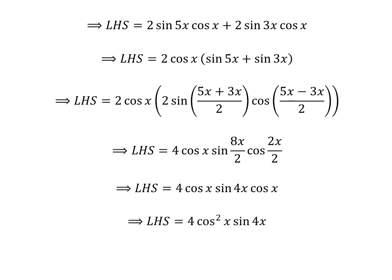The above expression can be written as the left hand side equal to 4 times the square of cosine of x times sine of 4x, which equals the right hand side of the given equation. So we have proved the given equation.